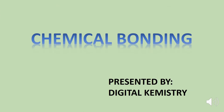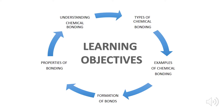Chemical bonding, presented by Digital Chemistry. The learning objectives are: understanding chemical bonding, types of chemical bonding, examples of bonding, formation of chemical bonding, and also the properties of chemical bonding.